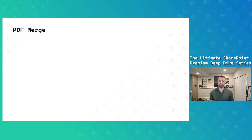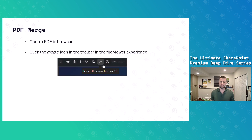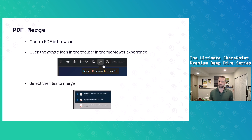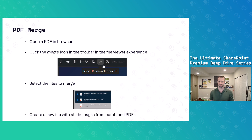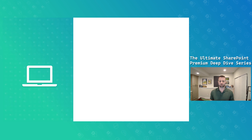We're going to start with PDF merge. To merge, you open a PDF in the browser, click the merge icon in the toolbar in the file viewer, then select the files you want to merge. You can grab however many files you'd like and create a new combined PDF file.